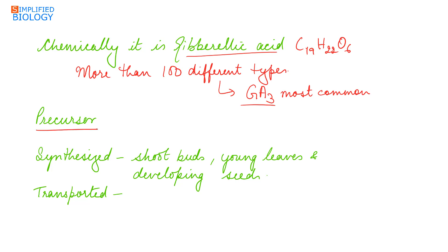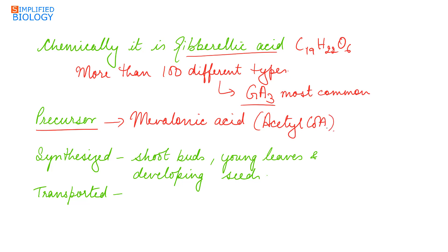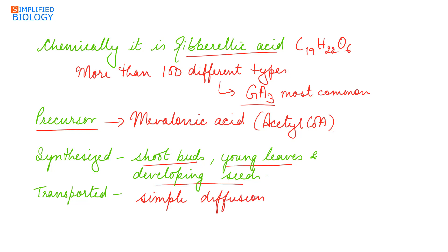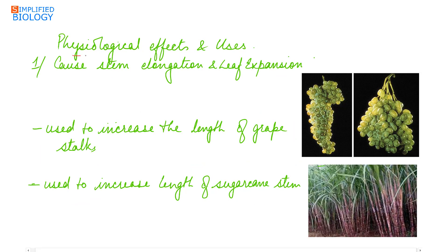The precursor of gibberellin is mevalonic acid, which is derived from acetyl coenzyme A. It is synthesized in the shoot buds, young leaves, and developing seeds, and is transported by simple diffusion.